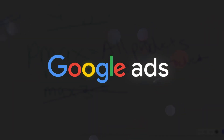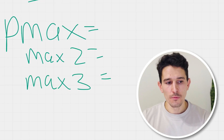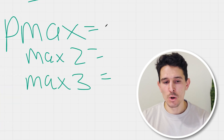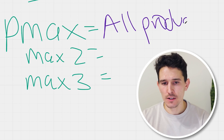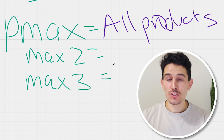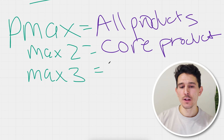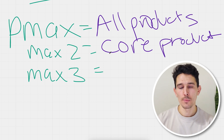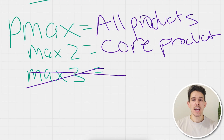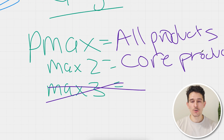On the Google side, the very first thing we're going to do is create a Pmax campaign — actually multiple Pmax campaigns. The first Pmax is your all-products campaign: every single product in your catalog minus what's in Max 2 and Max 3. Max 2 is your core product — the one to five products that drive at least 50% of the revenue for your entire business. Max 3 can be a category of non-core products that still drive significant revenue. What's most important is you have your all-products and your core-products campaigns.